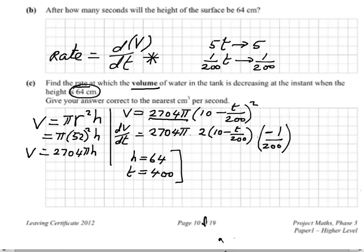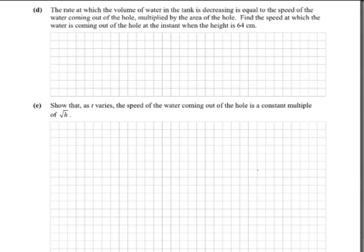We're not particularly interested in the numerical answer here — we're more interested in the techniques. At this stage you simply put t equals 400 into the dV/dt equation and you get an answer. Moving on to part D: the rate at which the volume of water is decreasing.